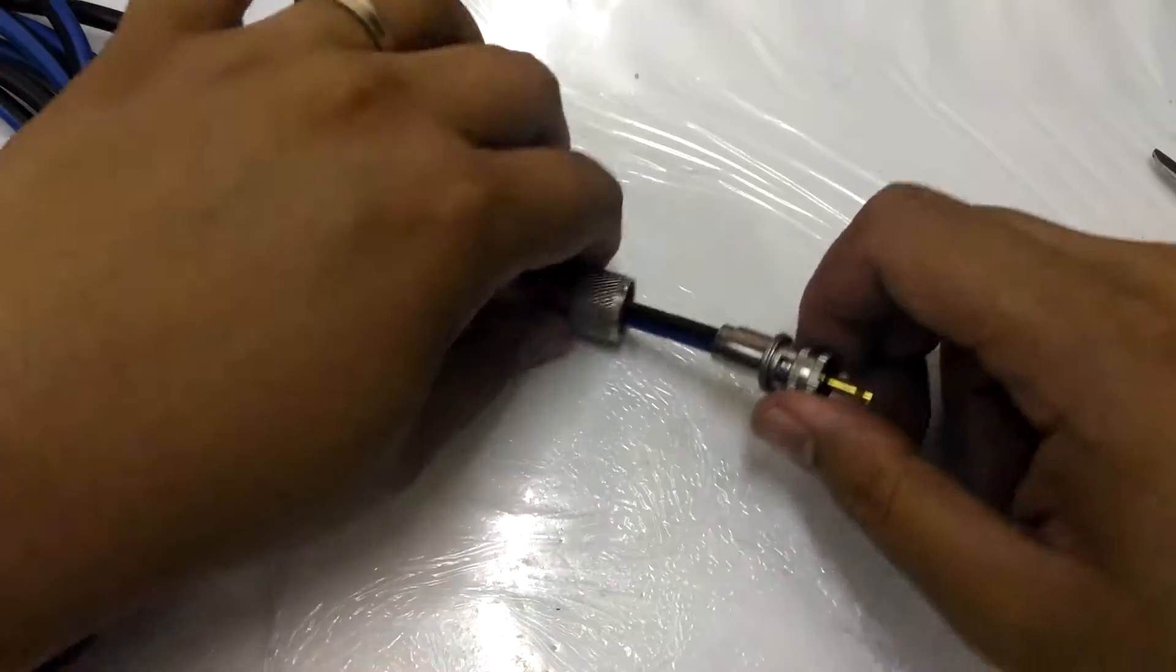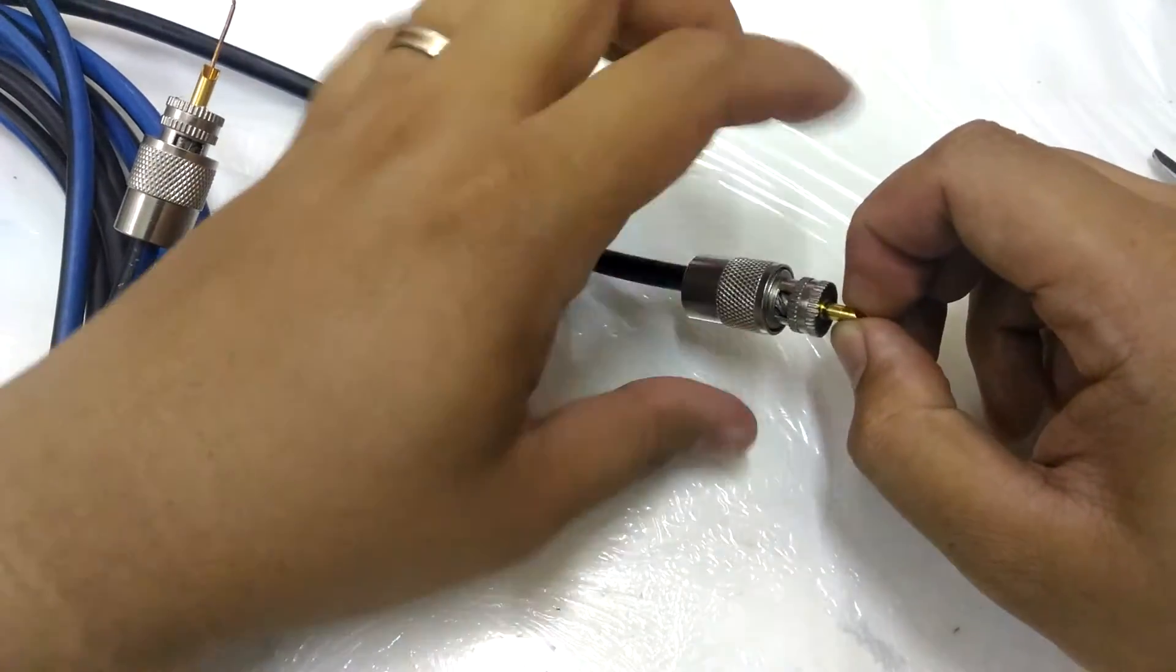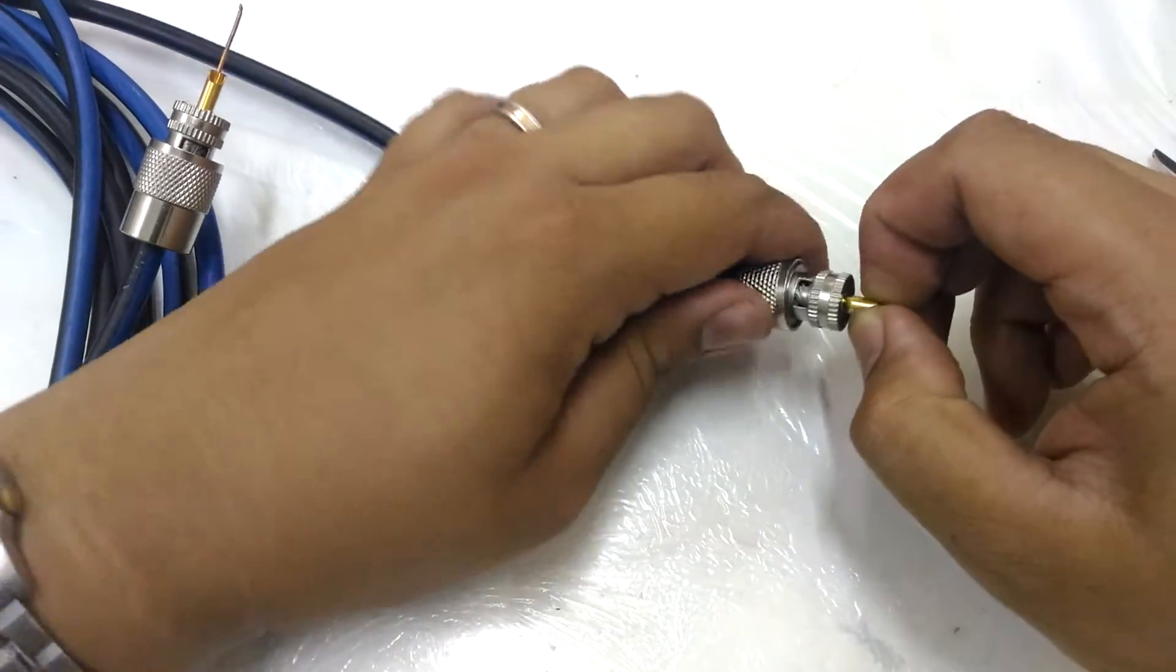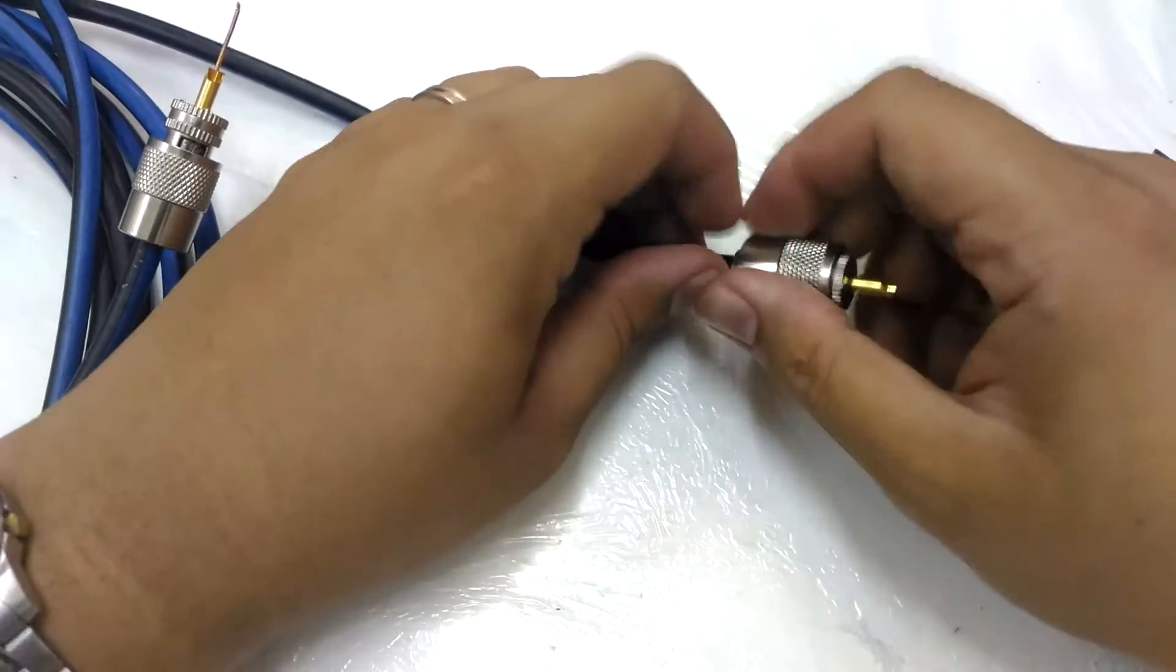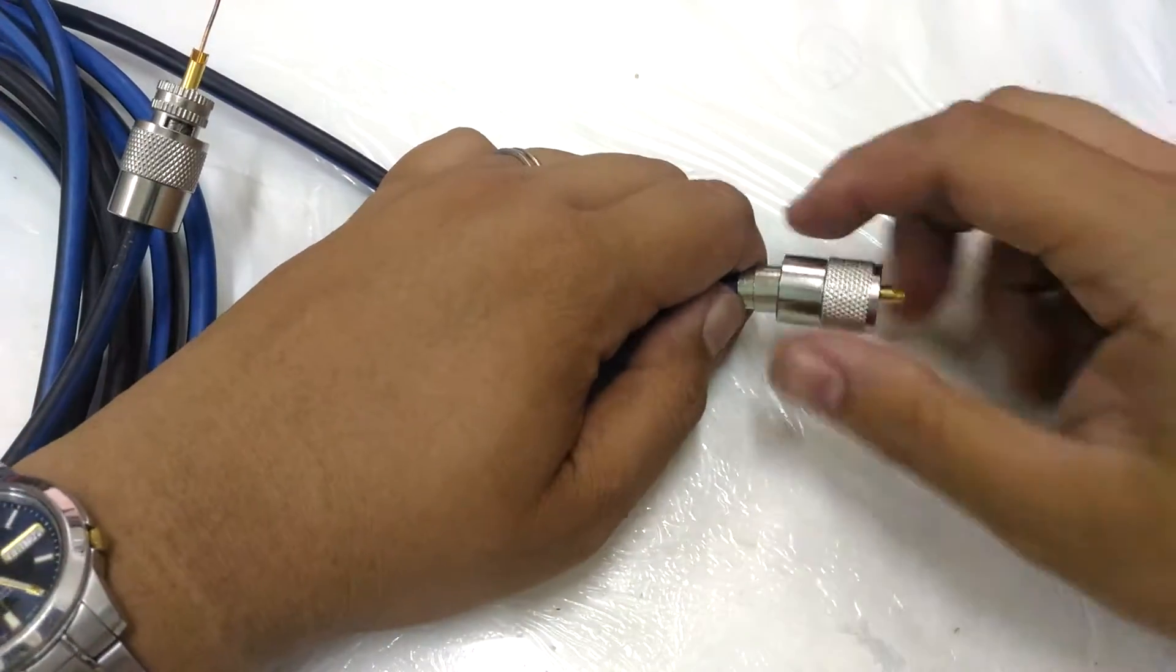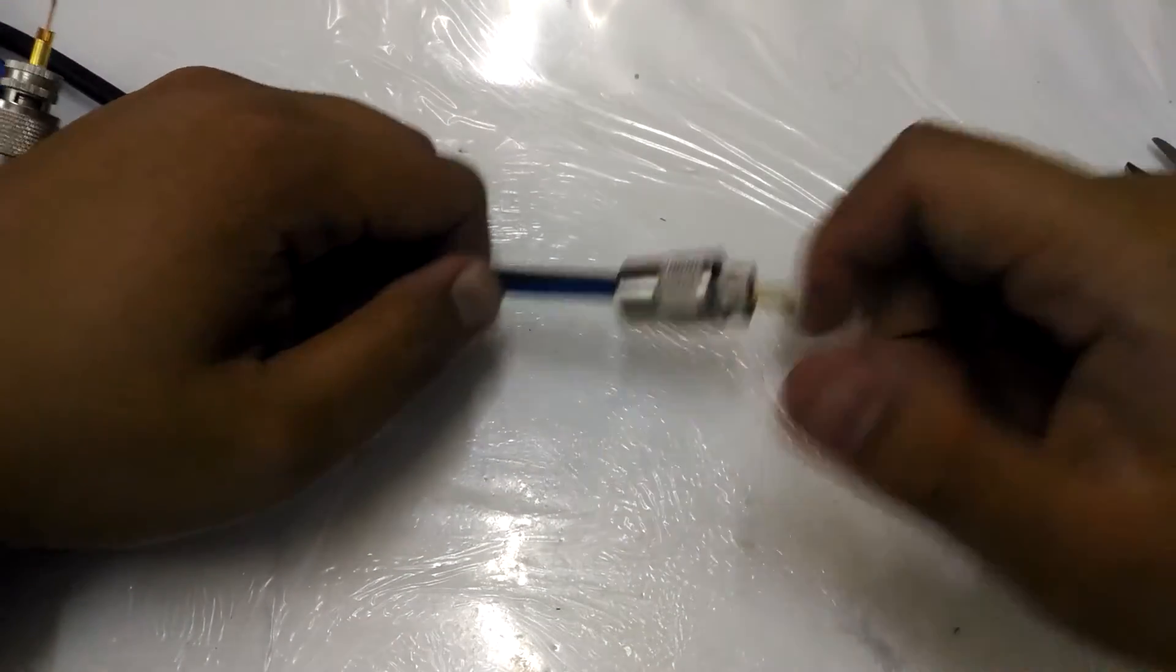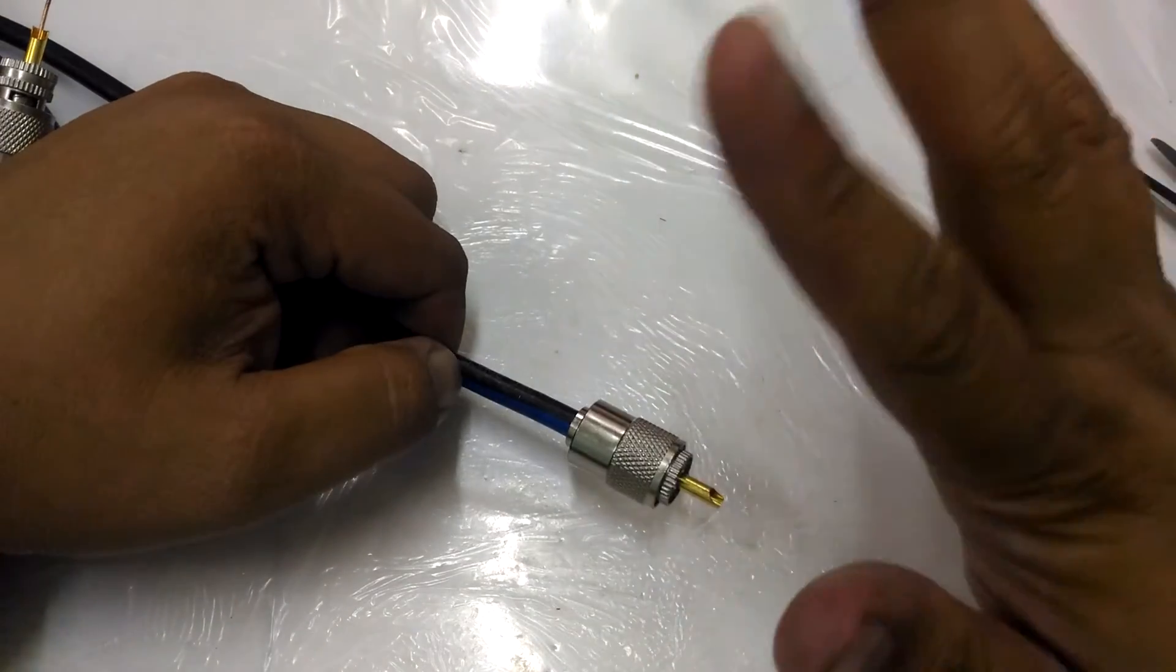So that's a short demonstration of the PL259 and how you're going to do it. Again, this is the wrong coaxial cable, but at least you know how to install it on the correct one. Thanks for watching, hope to see you in the next episode.